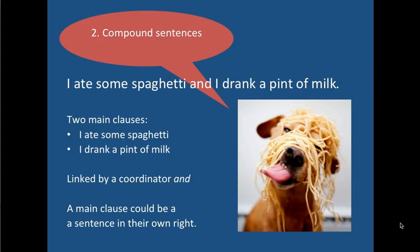So that's the simple sentences. We can move on to the compound sentences. An example is: 'I ate some spaghetti and I drank a pint of milk.' What's happening here is that you have two main clauses — 'I ate some spaghetti' and 'I drank a pint of milk' — linked together by the coordinator 'and.' These are two main clauses because you could use them independently. 'I ate some spaghetti' makes perfect sense; 'I drank a pint' makes perfect sense. So they are two main clauses connected by the word 'and,' and 'and' is therefore called a coordinator — it coordinates two main clauses.